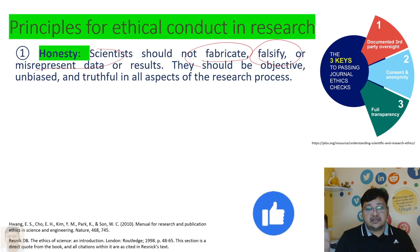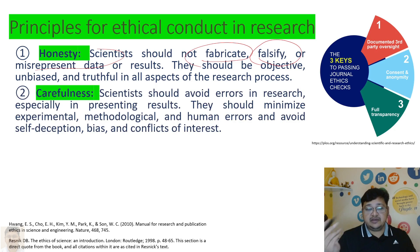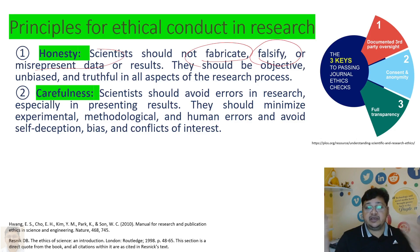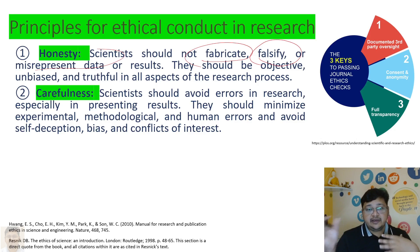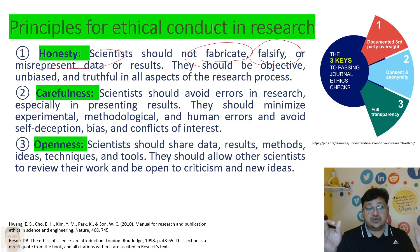Research should not be biased and there should be nothing that leads to misconduct. Another component is carefulness. In many cases, due to human error or experimental error — for instance, equipment not being calibrated or pre-processing not being done before experimentation — minimal experimental, methodological, or human error can occur. These errors, along with biasness and conflicts of interest, need to be avoided. Scientists should be aware of how they present their results to avoid unknowing falsification of data.